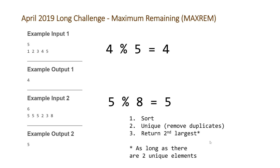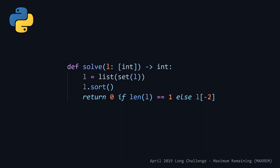Let's move to the code solutions. In our Python solution we use type annotations, which Python 3 provides. We have a list of integers l, and to get unique elements we convert it to a set and then back to a list. Then we sort it, and on the last line we return zero if the length of the list is equal to one, otherwise we return the second last element using negative two indexing.